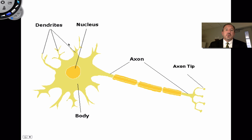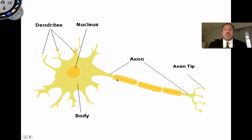Here again is a typical diagram of a neuron. Here are the dendrites with lots of branching, here's the cell body, here's the axon. These darkened structures are actually assistant cells that are supportive of the neuron, called Schwann cells. In a separate video on the nervous system we'll get into this more. They wrap around the axon forming a myelin sheath that helps to conduct the nerve impulse very rapidly.